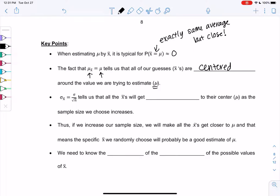So we're taking samples because we want to estimate the real average. Sigma of x bar equals sigma over square root n tells us that the x bars get closer to their center as the sample size increases. That means basically we get less error. So that's a good thing. And so if we increase our sample size, our x bars get closer to mu, and that means specific x bar we randomly choose will probably be good estimates of mu. So as our n gets bigger, we're confident that we're making good estimates of the average. And the only thing we need to figure out now is the shape and distribution, shape of the distribution of the sample means, so that way we can actually start making some predictions.